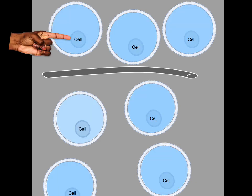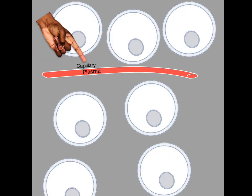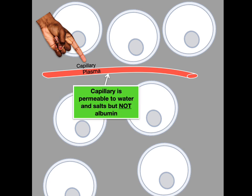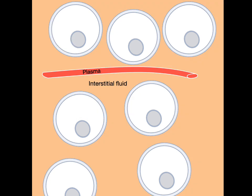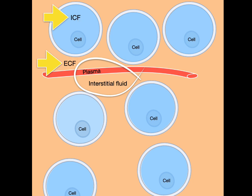In this illustration, those circles represent cells, and inside all the cells is intracellular fluid, which is separated from the extracellular compartment via the cell membrane, which is permeable to water but not salts like sodium or chloride. Capillaries are filled with plasma and the endothelium lining the capillaries is permeable to water and salts but not albumin. The interstitial fluid is the fluid between the cells and, combined with plasma, is considered extracellular fluid. Extracellular fluid is all the fluid outside of cells; intracellular fluid is all the fluid inside cells, and from now on those two terms will be abbreviated ICF and ECF.